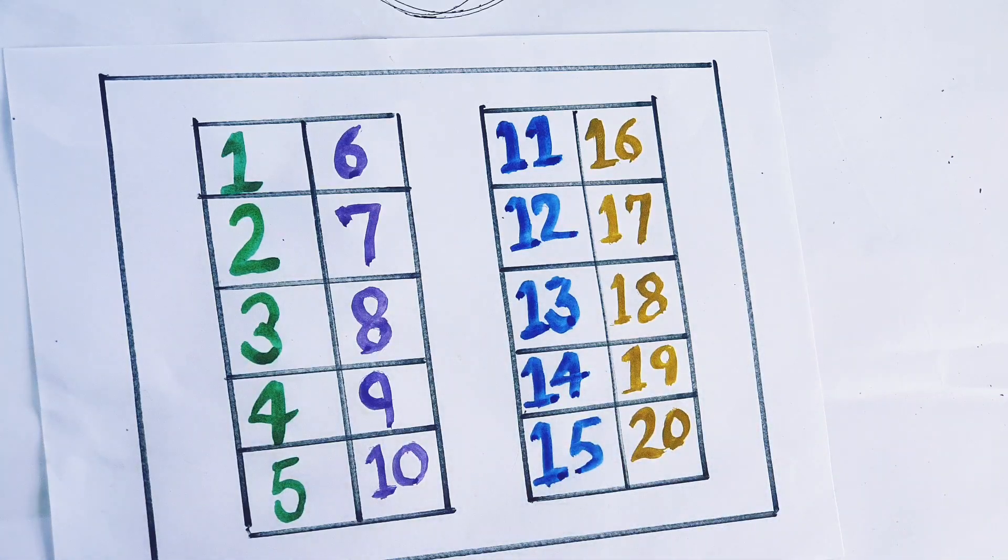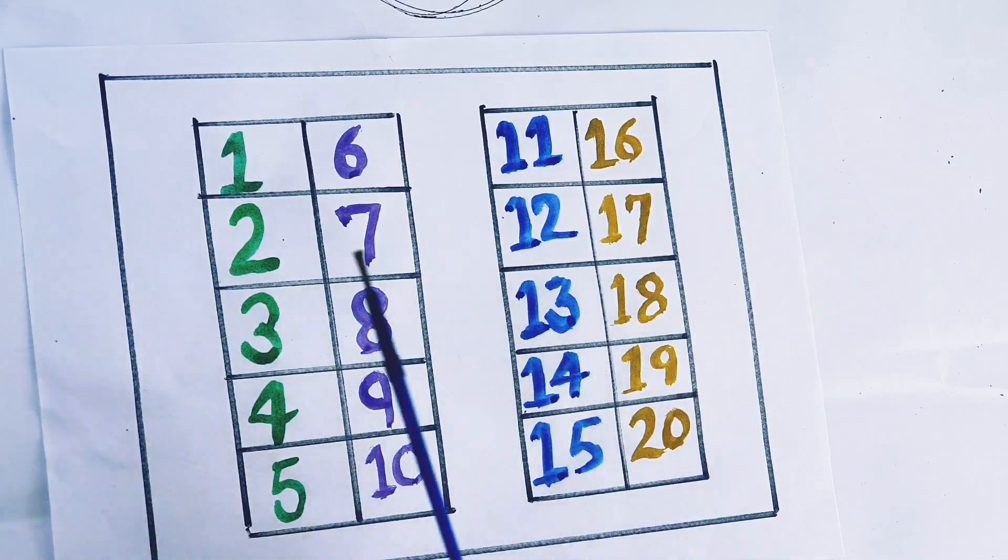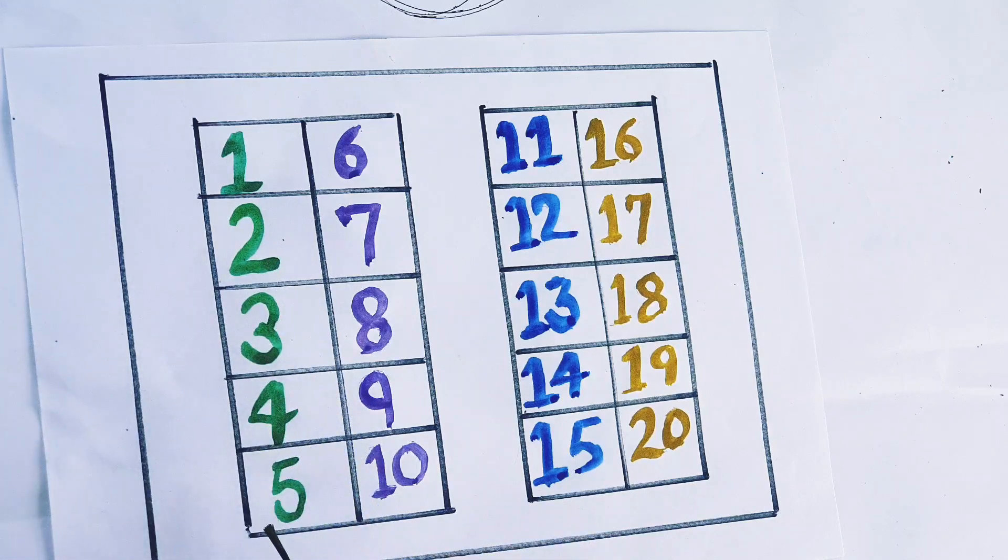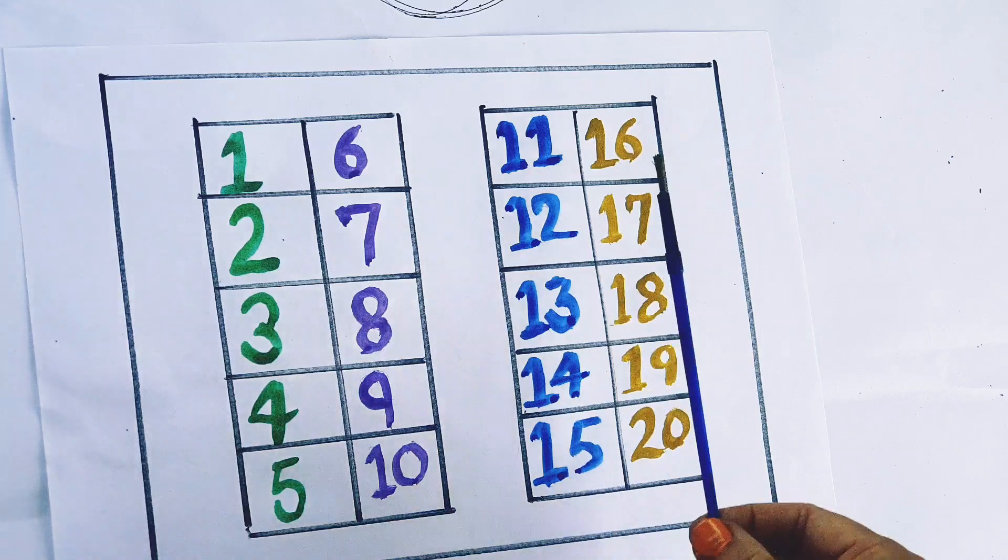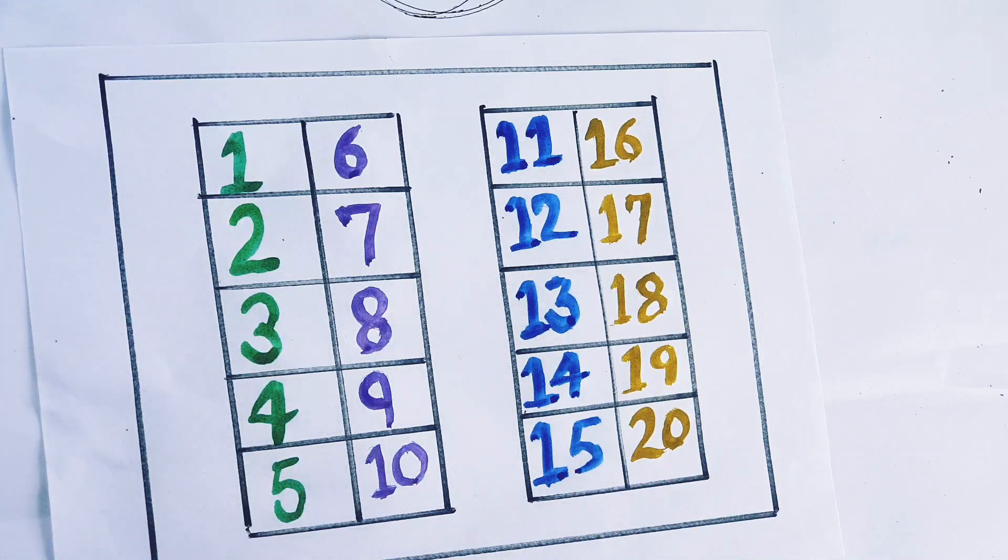So kids what we learned today we learned about green color, purple color, blue color, and yellow color: 1, 2, 3, 4, 5, 6, 7, 8, 9, 10, 11, 12, 13, 14, 15, 16, 17, 18, 19, 20.